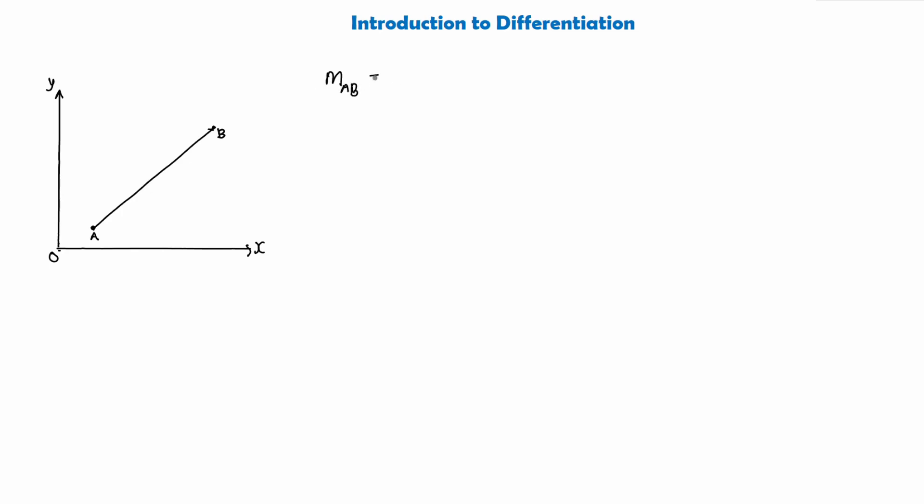is equal to the vertical distance divided by the horizontal distance. Now what about the gradient of a curve? If I was to draw you this curve here, which we're calling y equals f(x), how on earth can we say what the gradient of this curve is going to be?